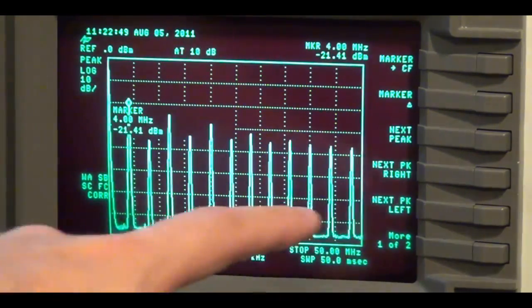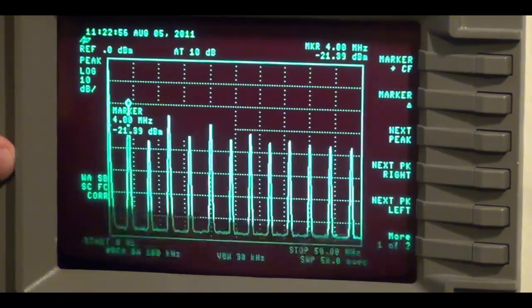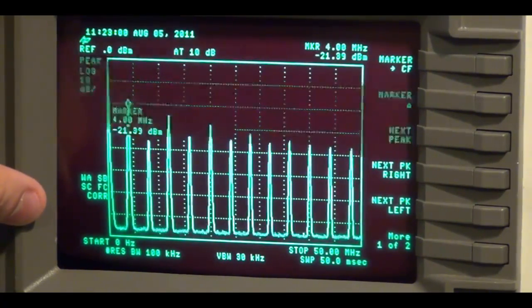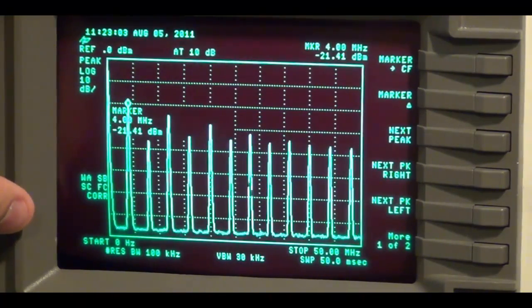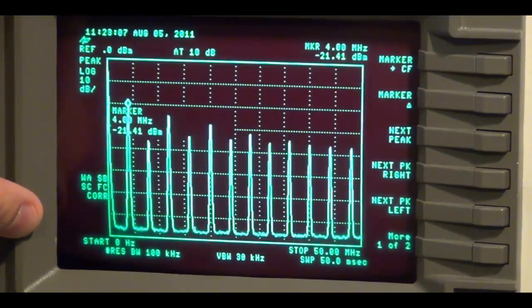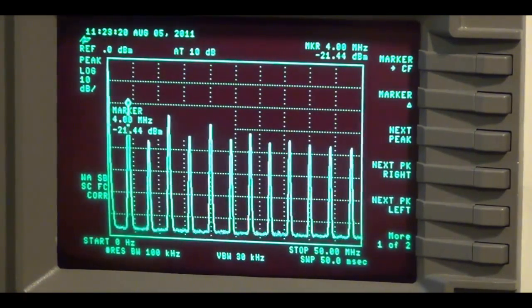So all these tones are present because it's a square wave. Now, does this matter? Is this bad or not? Well, depends on what you're doing with the crystal oscillator. If you're using the crystal oscillator to clock a processor, it doesn't matter. Because a processor gets its timing information from edges.